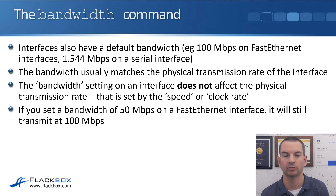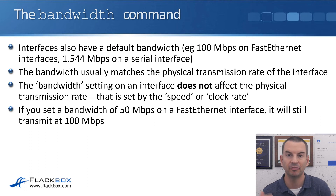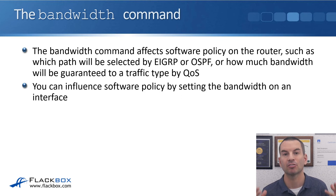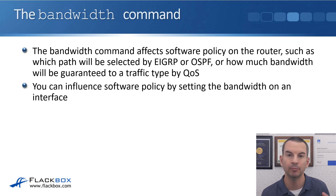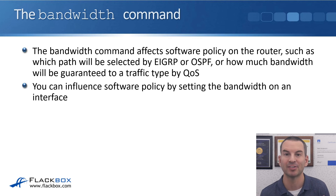So if you set a bandwidth of 50 Mbps on a Fast Ethernet interface, it will still transmit at 100 Mbps. If the bandwidth setting does not affect the actual physical speed, what does it do? It affects software policy on the router — such as which path will be selected by routing protocols like EIGRP or OSPF, or how much bandwidth will be guaranteed to a traffic type by QoS. For example, if you've configured a QoS policy to guarantee your video traffic a third of the bandwidth on an interface, you tell the router how much bandwidth is actually there using the bandwidth command.